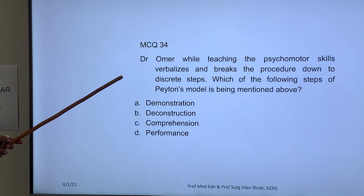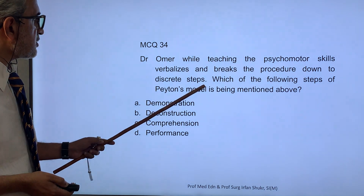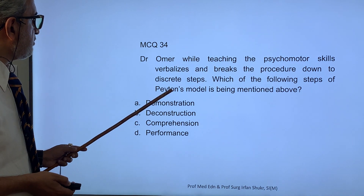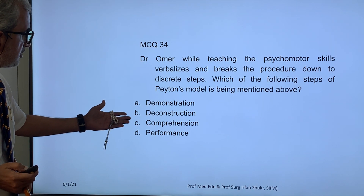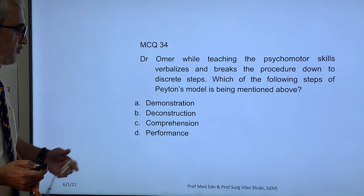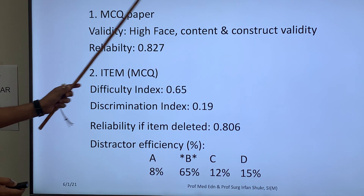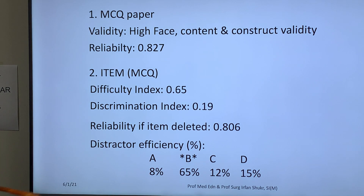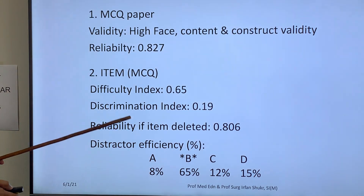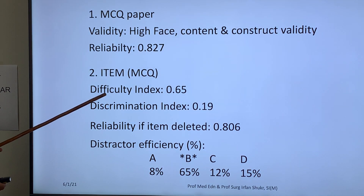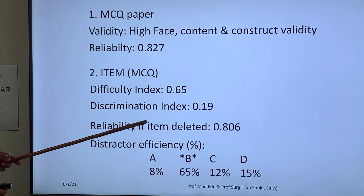Second example: Dr. Umar, while teaching a psychomotor skill, verbalizes and breaks the procedure down into discrete steps. Which of the following steps of the Peyton method is being mentioned? Options: demonstration, deconstruction, comprehension, performance. The tool validity and reliability values remain the same since it is the same paper, but item-level values differ.